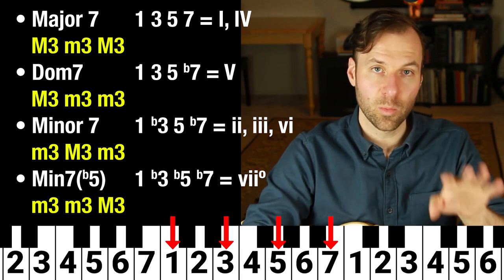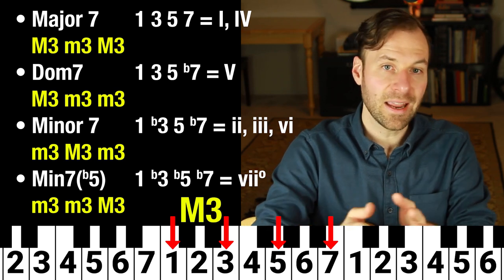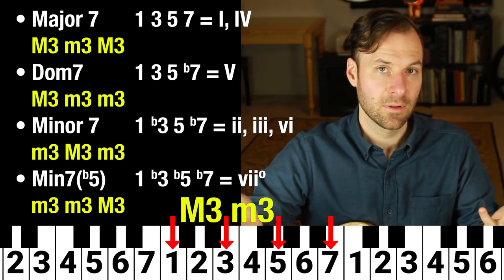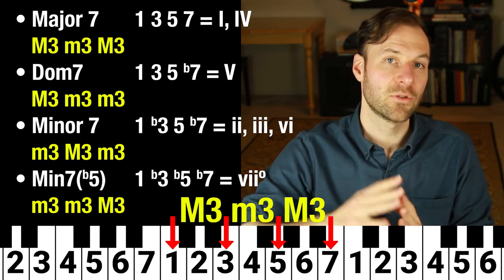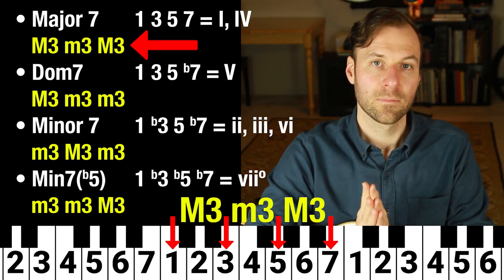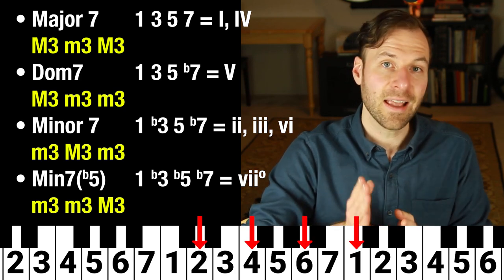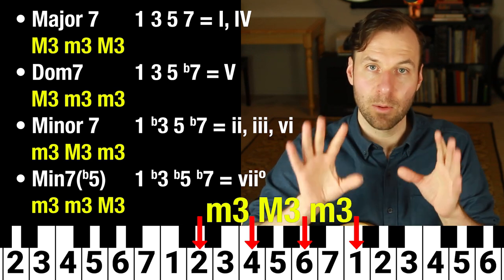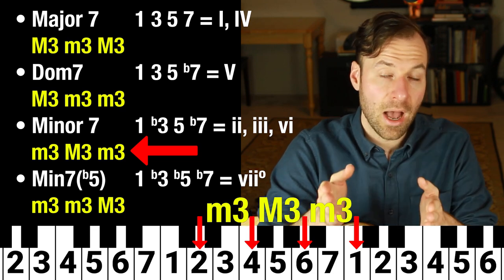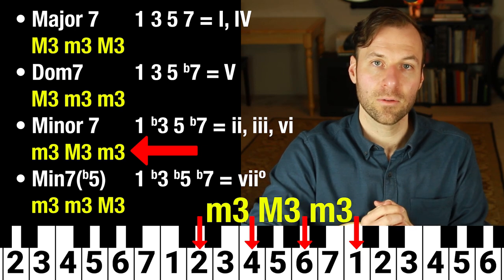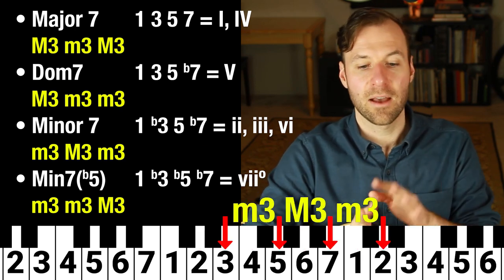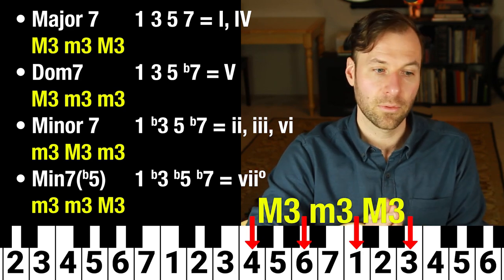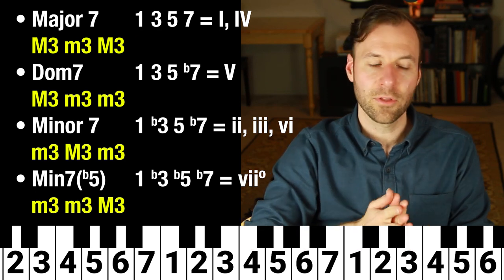Let's put this to the test. For the one chord — one, three, five, seven — between one and three there's no half step, so that's a major third. Between three and five there is a half step, so that's a minor third. Between five and seven there's no half step, so that's a major third. Major third, minor third, major third — that is the major seven chord. For the two chord: two to four has a half step, minor third; four to six has no half step, major third; six to one has a half step, minor third. Minor third, major third, minor third — that's the minor seven chord. That's why the two chord in a major key is always minor seven. The three chord gives the same structure, also minor seven. The four chord: four to six is major third, six to one is minor third, one to three is major third — that's major seven again.